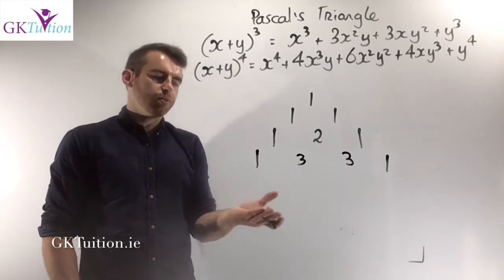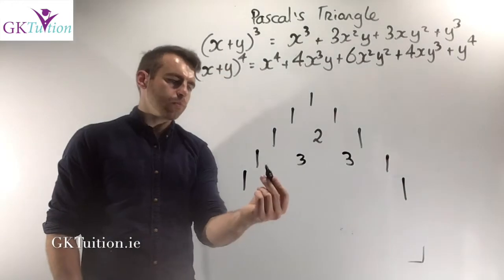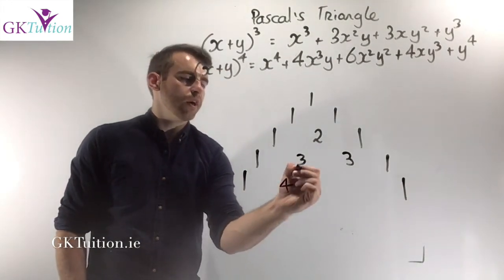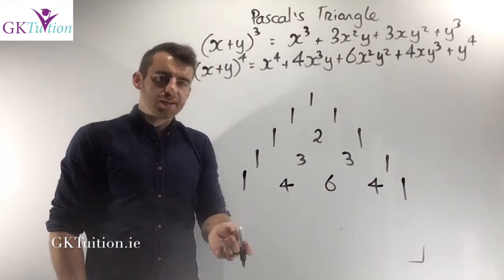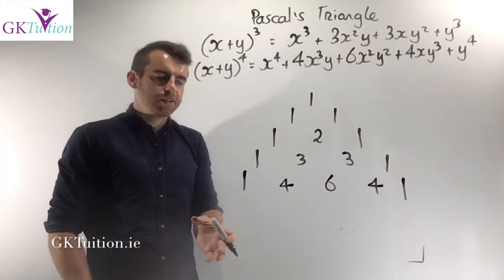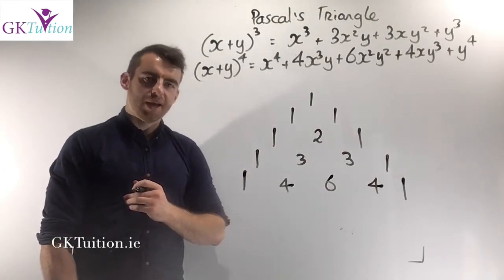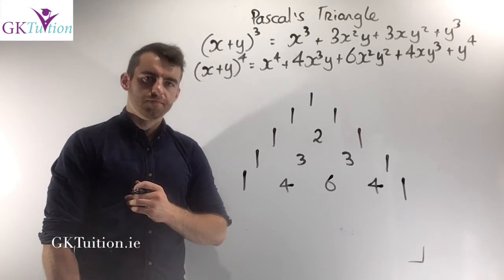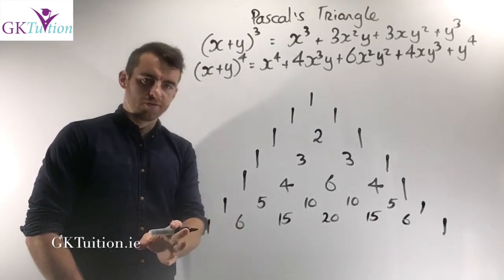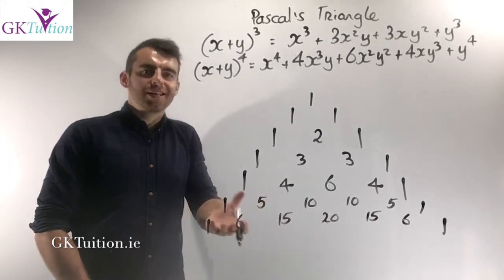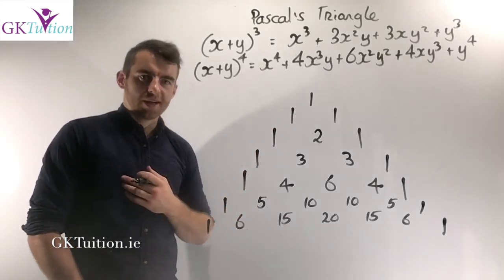Continuing on, the fifth row has five numbers. The first and last are 1. Then 1 plus 3 is 4, 3 plus 3 is 6, and 3 plus 1 gives me 4. You could continue this on indefinitely. I want you to pause the video and write out the next two rows in your Pascal's Triangle. You just need to be able to write out the first few rows.